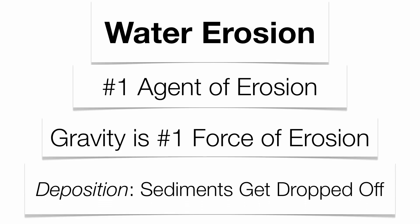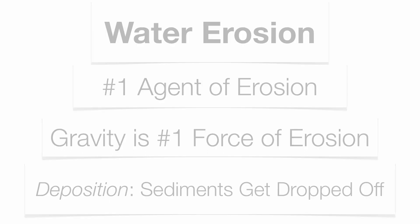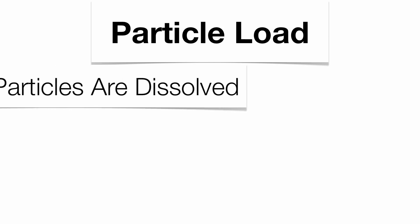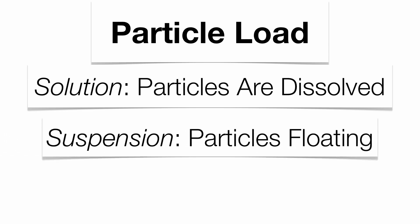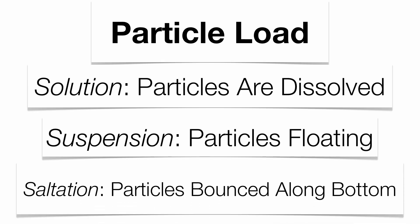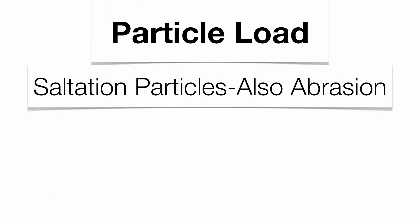Whenever you get erosion, there's got to be deposition as well. I have a whole other podcast on deposition, so please make sure you check that out. Deposition just very simply means that sediments get dropped off. Particles are going to get picked up by water in what we call the load. You have the solution load — those are the dissolved particles — the suspension load, the floating particles that make water look muddy, and then the saltation load, which allows your particles to bounce along the bottom of the stream bed. Because particles get dragged along the bottom, they're also going to get rounded out through the process of abrasion, and abrasion is a weathering process. So you see that erosion and weathering occur simultaneously.